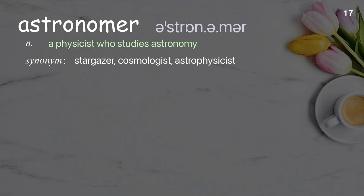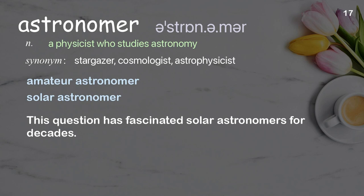Astronomer: a physicist who studies astronomy. Examples: amateur astronomer, solar astronomer. This question has fascinated solar astronomers for decades.